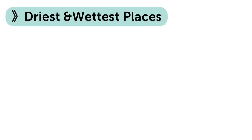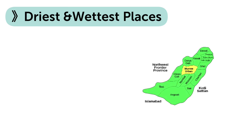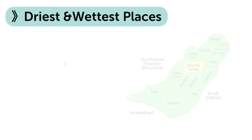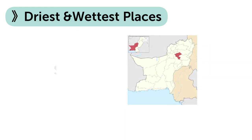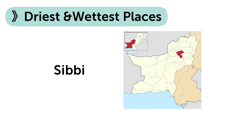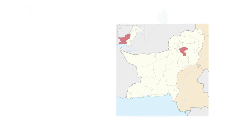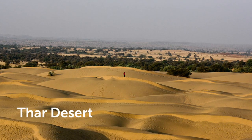The next point is driest and wettest places of Pakistan. The most wettest and rainiest place of Pakistan is Murree. The average annual rainfall of Murree is 164 cm. The driest place of Pakistan is Sibbi. The largest desert of Pakistan is the Thar Desert, situated in Sindh.